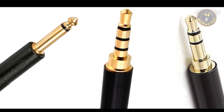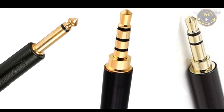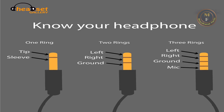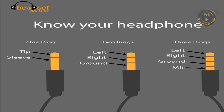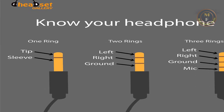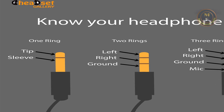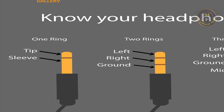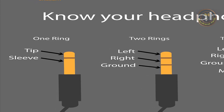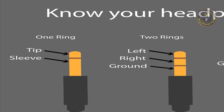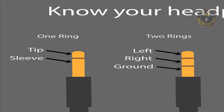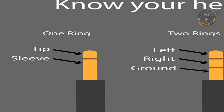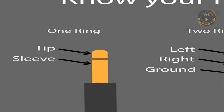The TS cable has one ring. There is a tip and a sleeve. The sleeve connects to the ground wire and the tip receives the audio signals. This is a mono audio pin — one audio signal. It is used for music instruments and camera mics. This type of headphone connection is not commonly available.